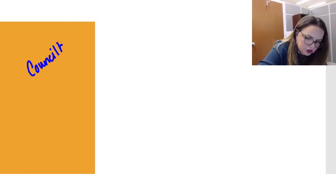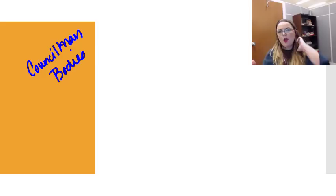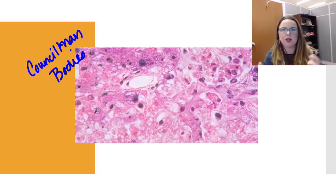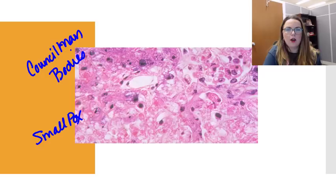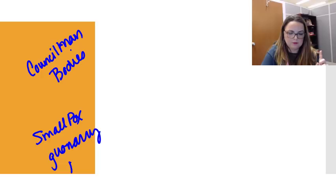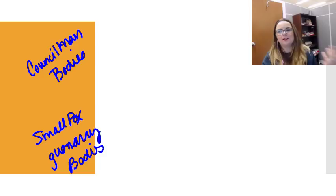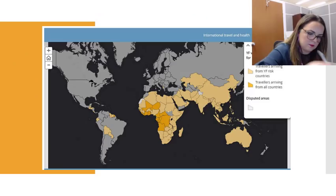Councilman bodies show up in the liver tissue of patients infected with yellow fever. They are basically inclusions — an excess of nucleic acid or protein that piles up inside the cell. There are various types of inclusions: smallpox produces Guarnieri bodies — you can remember that because it's 'all gone' — rabies causes Negri bodies, herpes causes Cowdry type A bodies, and yellow fever gives you councilman bodies.